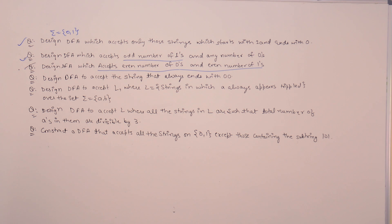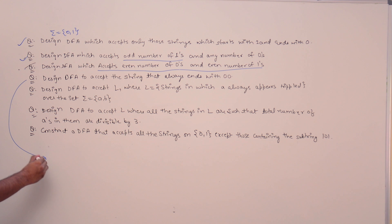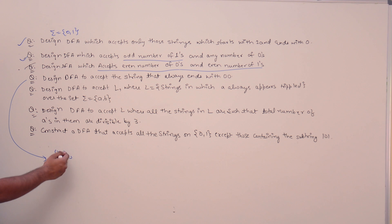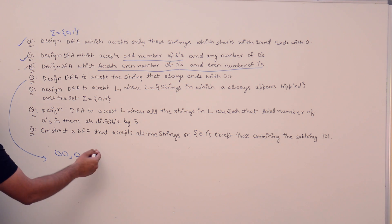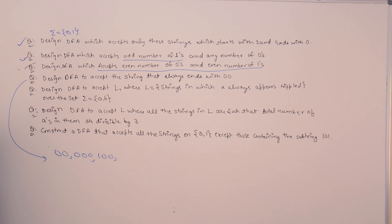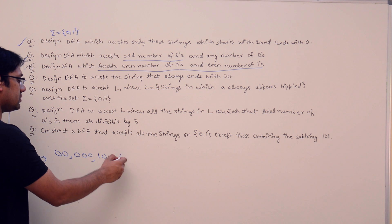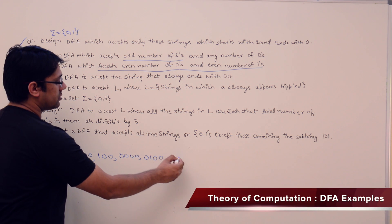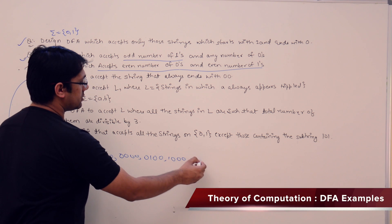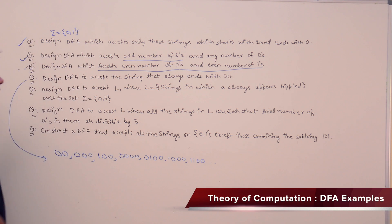The next question is to design a DFA to accept strings that end with 00. What are the strings that end with 00? If you have 00, it is ending with 00. If you have 000, it is ending with 00. If you have 100, it is ending with 00. 0000, 1000, 1100, and so on. All the strings should end with 00.